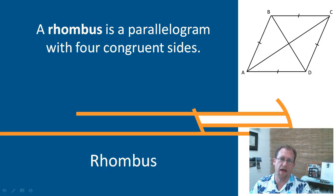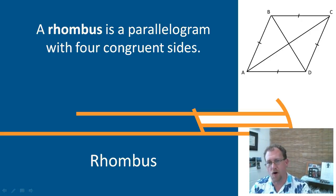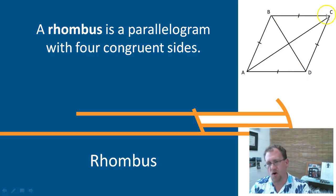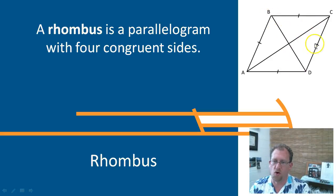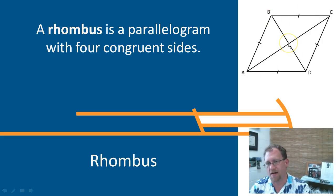If you take a parallelogram and you allow it to be slanty but force all four sides to have the same measure, then now you have a rhombus. The opposite sides are parallel and all four sides are congruent. The opposite angles are also congruent because it's still a parallelogram — just a particular kind. Interestingly, in a rhombus, the diagonals formed by the opposite vertices will meet at a 90 degree angle. So it's a right angle intersection. That's a rhombus: four congruent sides and the opposite sides are parallel.